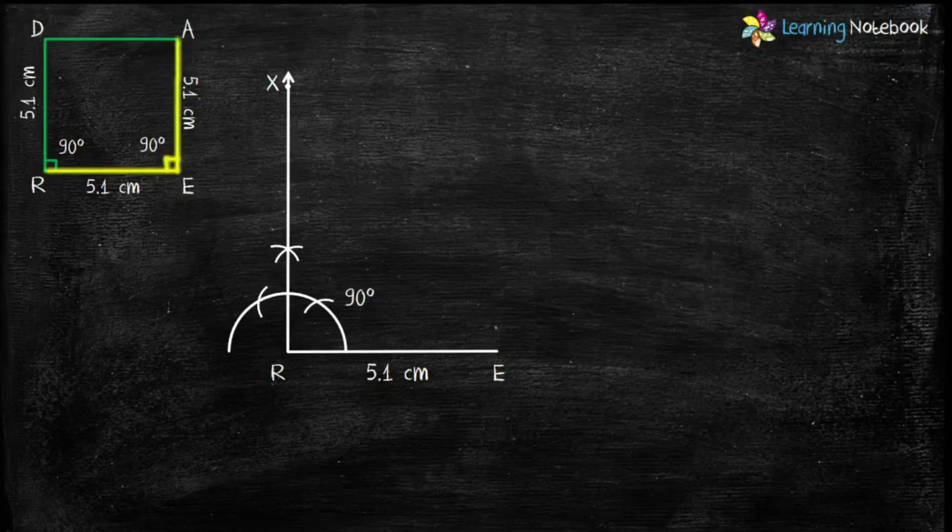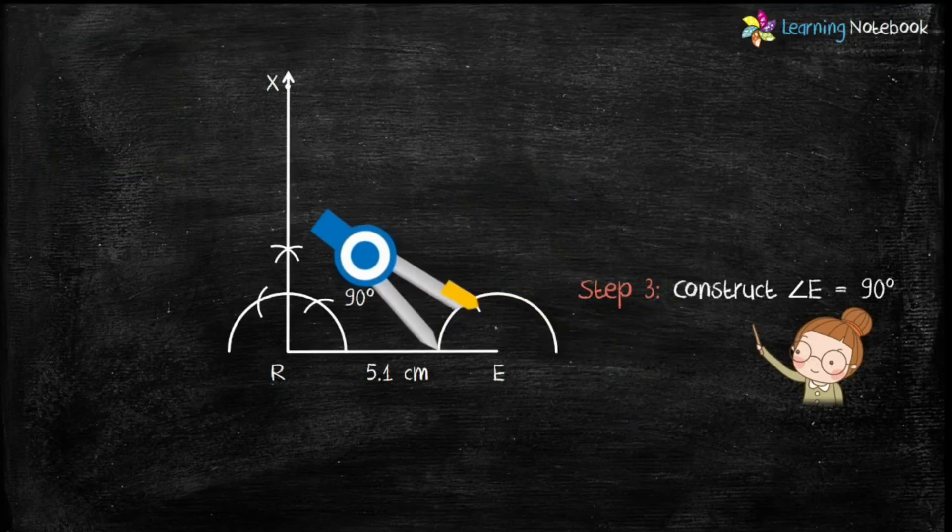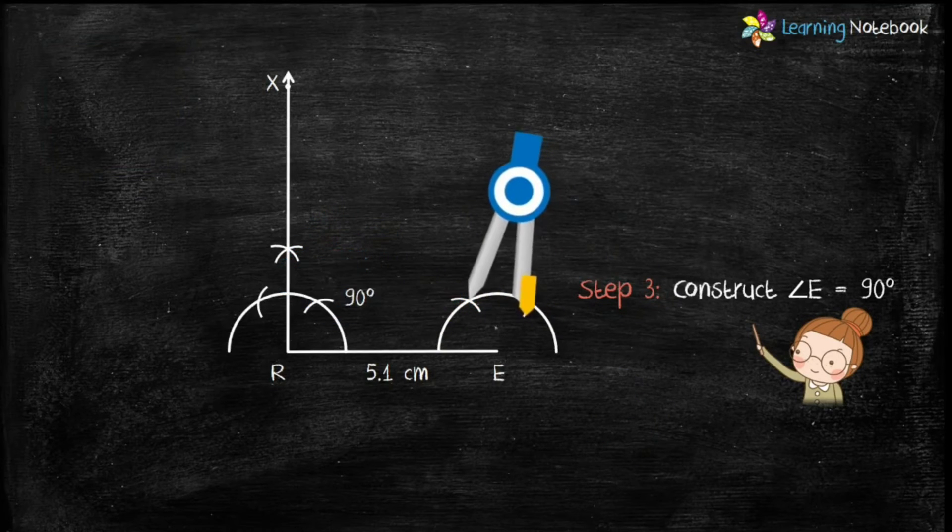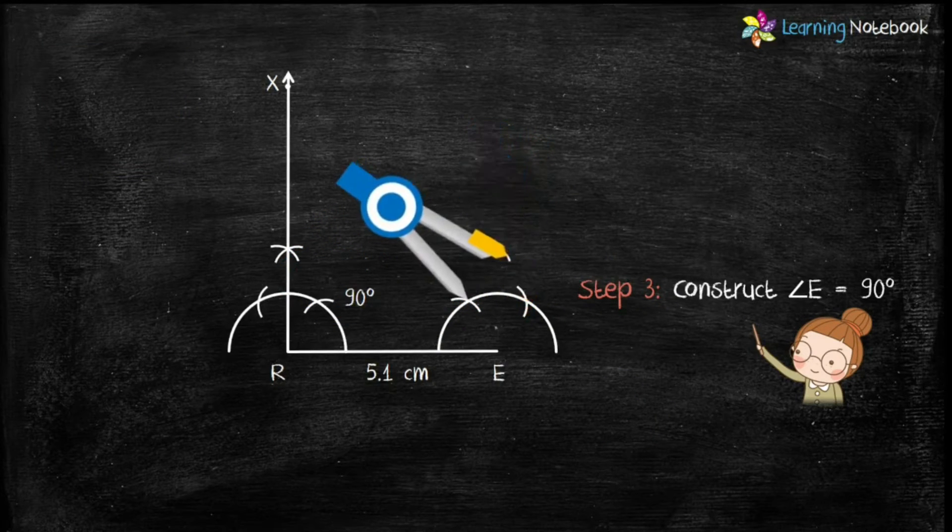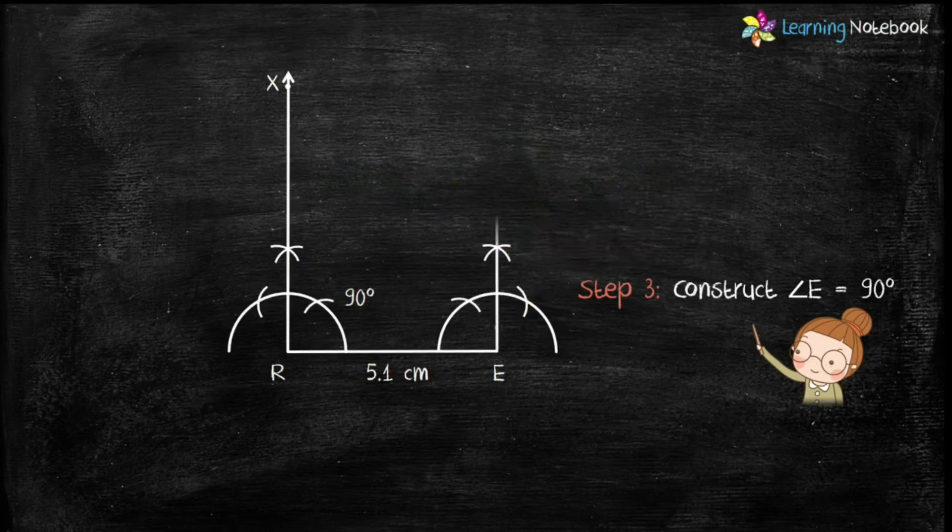Similarly, in step 3, let's construct angle E equals to 90 degrees. So students, by now we have constructed one side and two angles.